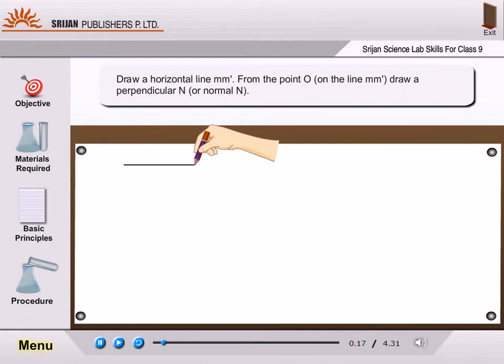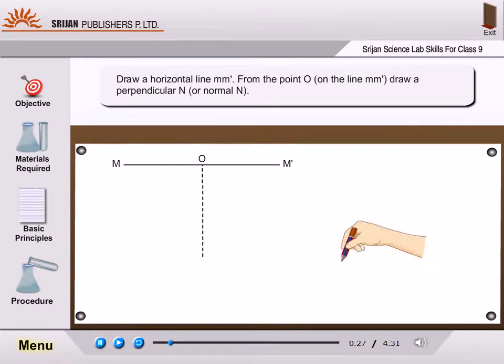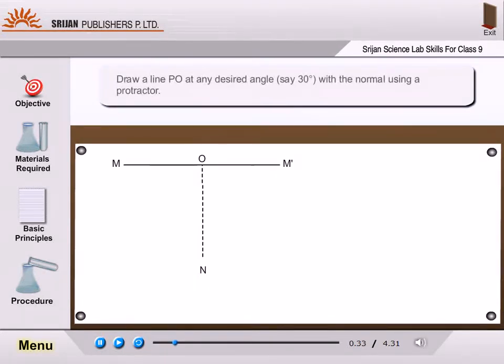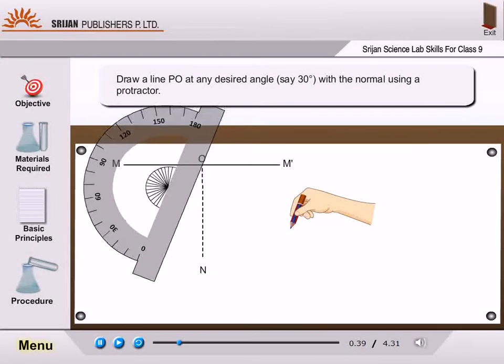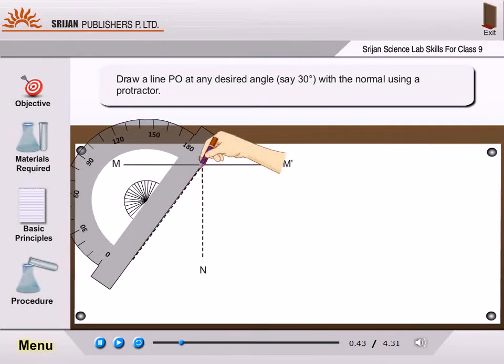Draw a horizontal line MM' from the point O. On the line MM', draw a perpendicular or normal ON. Draw a line PO at any desired angle, say 30 degrees with the normal using a protractor.